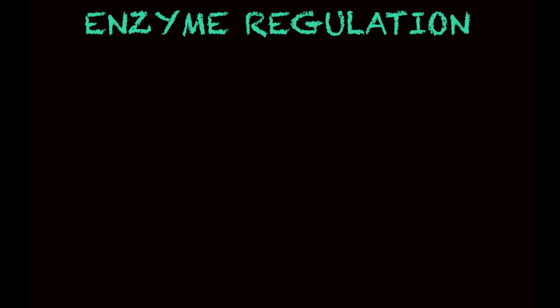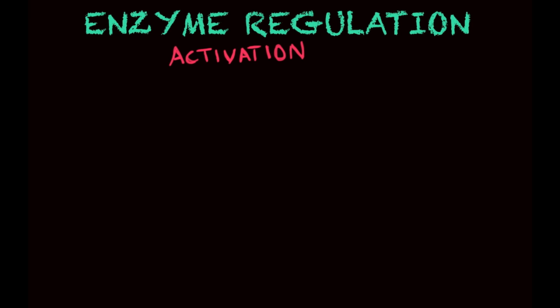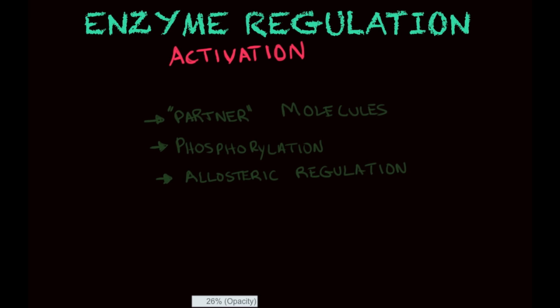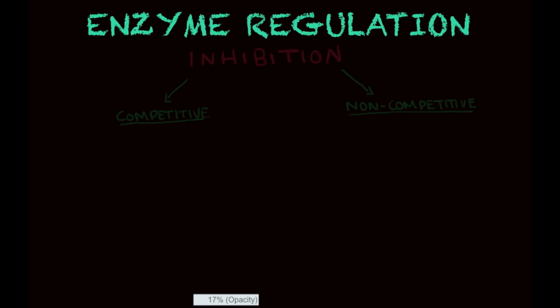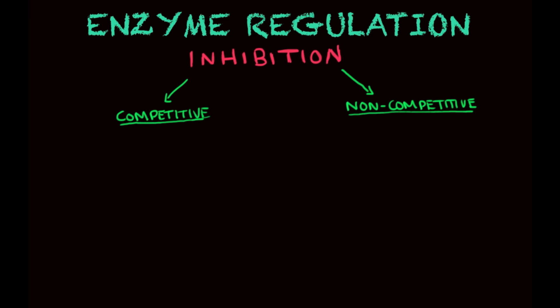After learning all those concepts of how enzymes can be regulated, we can say that enzymes can be activated or switched on in three ways: the first is through partner molecules, the second is phosphorylation, and the last is allosteric regulation. Moving on to inhibition — switching off an enzyme — there are two subcategories: competitive and non-competitive inhibition.